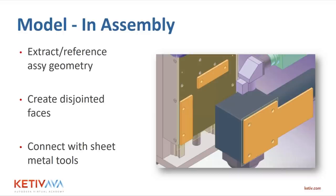Now let's talk about modeling in an assembly — designing parts to support a structure or motor within context. It's no different than designing a part in the context of an assembly, except we're doing it with sheet metal. Three steps: extract reference geometry by projecting edges, create disjointed faces, then quickly connect them. On the Assemble tab, click Create and call it Bracket, using a sheet metal template from the start.